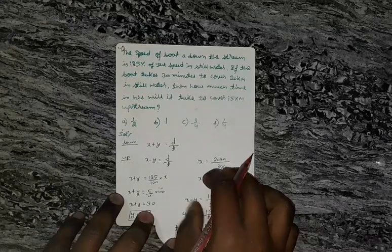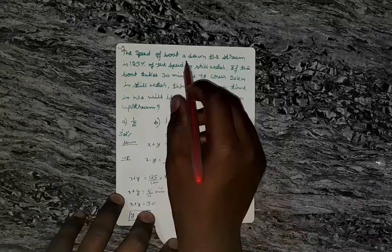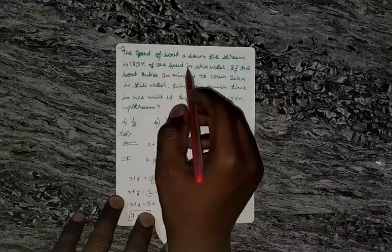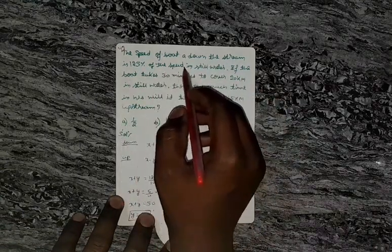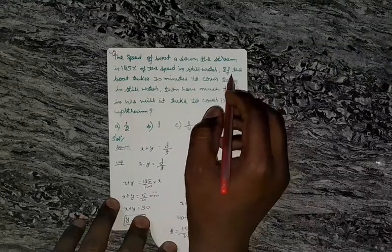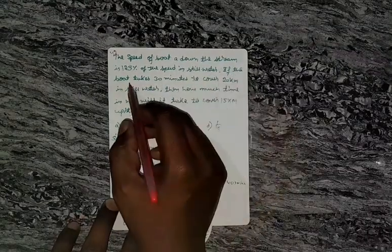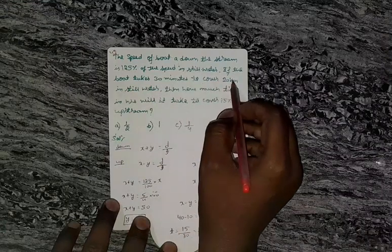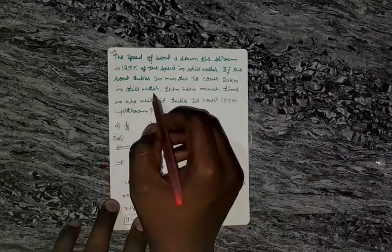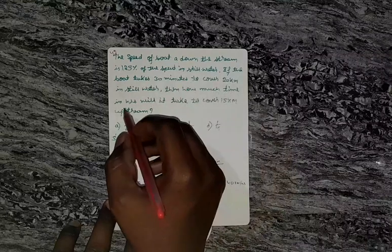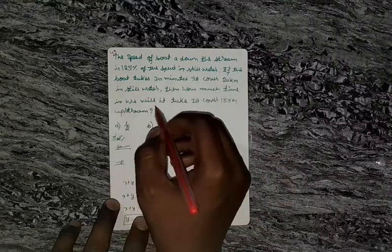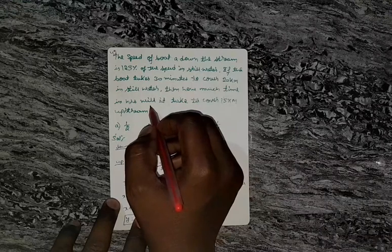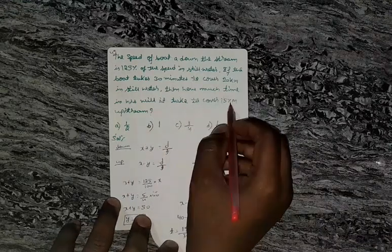The speed of the boat downstream is 125 percent of the speed in still water. If the boat takes 30 minutes to cover 20 kilometers in still water, how much time will it take to cover 15 kilometers upstream?